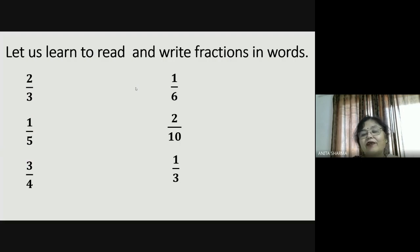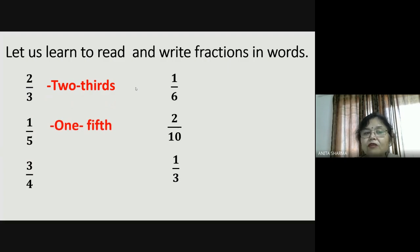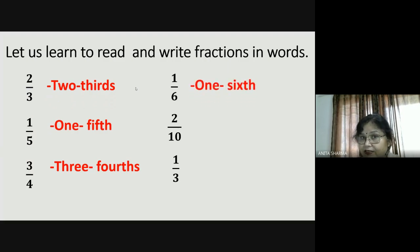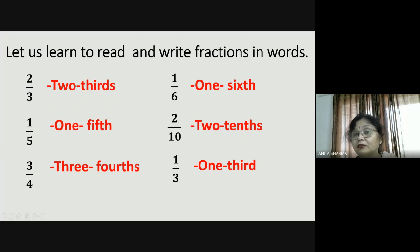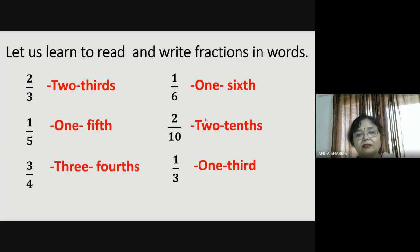Let us learn to read and write fractions in words. Two by three is read as two-thirds. One by five is one-fifth. Three by four is three-fourths. One by six is one-sixth. Two by ten is two-tenths. One by three is one-third. Notice one thing: if your numerator is singular — meaning we are talking about only one thing — there is no S, like one-sixth. But if the numerator is plural — two, three, four — then we add S, like two-tenths or three-fourths, because we are talking about two or more things.